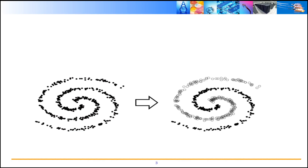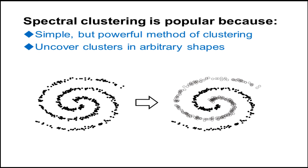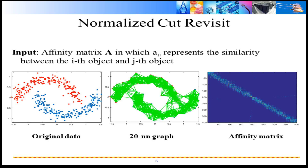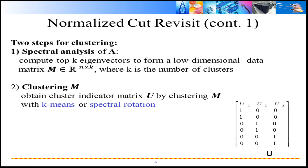Spectral clustering is popular because it's simple yet efficient and it can uncover clusters in arbitrary shapes. Normalized Cut is a commonly used Spectral Clustering method. Before running it, we must construct an affinity matrix, such as a K-nearest neighbor graph. The 2-step method is used to obtain the cluster partition matrix — performing eigen-decomposition on the affinity matrix first, and finally obtaining the cluster partition matrix via K-means or Spectral Rotation.